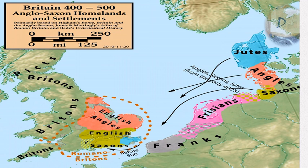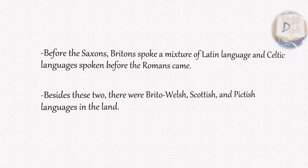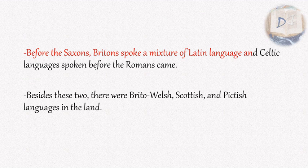During and after the invasion, some of the Britain natives had gone to other parts of the island and saved their language, but the Anglo-Saxon language spread all over the island. Before the Saxons, Britons spoke a mixture of Latin and Celtic languages spoken before the Romans came.